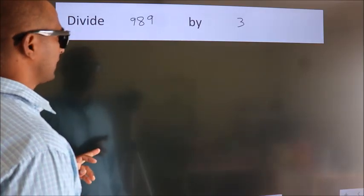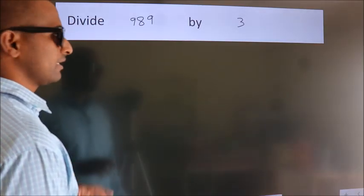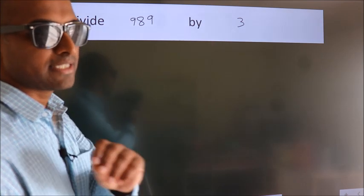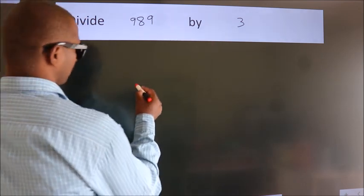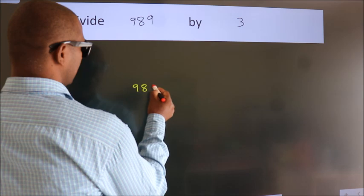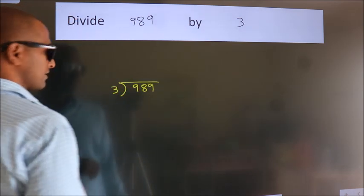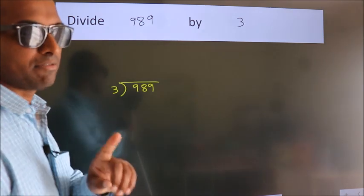Divide 989 by 3. To do this division, we should frame it in this way. 989 here, 3 here. This is your step 1.